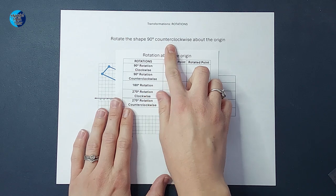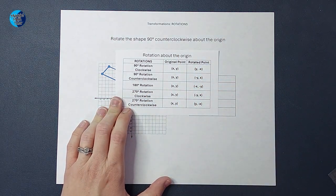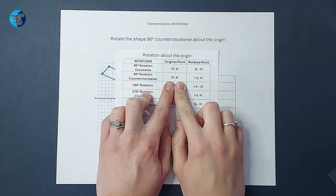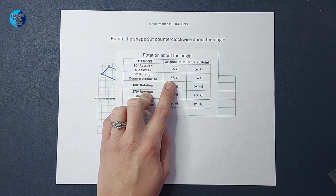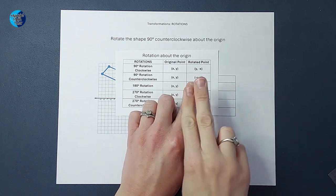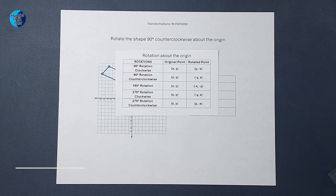So this one is 90 degrees counterclockwise about the origin. So when I find that on my table, I see if my original point is (x, y) on a shape, to rotate it 90 degrees counterclockwise about the origin, I am going to flip the x and y and change y's sign.